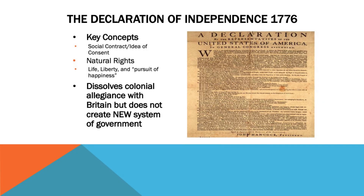The U.S. Constitution was strongly influenced by the political philosophies of John Locke, primarily by the idea of the social contract — that all Americans, well, really wealthy white male Americans at this point, but more on that later, were entitled to life, liberty, and the pursuit of happiness. And this was a radical statement, at least for the time, to be spelled out in a governing document. One thing I'd like you to know in particular is that the Declaration of Independence did not create a new form of government for the American colonies. All the document did was dissolve colonial allegiances with Britain.